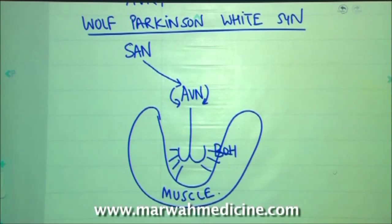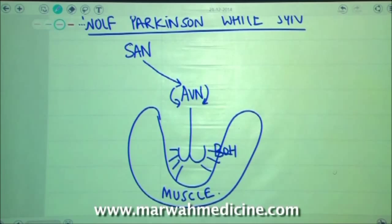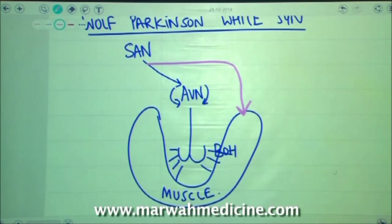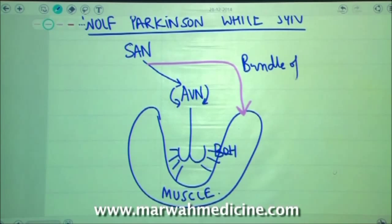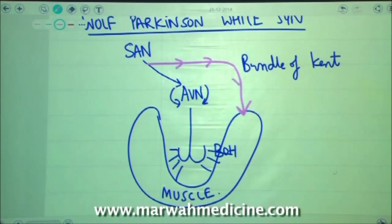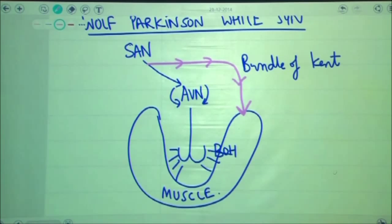In normal individuals, the cardiac muscle gets electrical information via this normal conduction pathway, which is responsible for generation of normal waves in the ECG. However, in patients of Wolf-Parkinson-White syndrome, there is an abnormal conduction pathway which directly short-circuits the current to the muscle. This abnormal pathway is known as the Bundle of Kent, which is responsible for transmission of current from the SA node directly to the muscle, and is known as the accessory pathway.